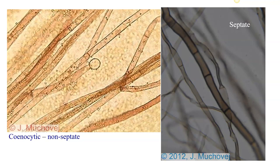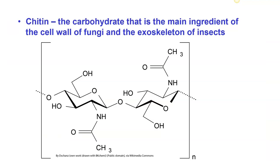Multicellular is considered to be more advanced than single-celled. The outer material on hyphae is called chitin, and chitin is the carbohydrate that is the main ingredient of the cell wall of fungi and of the exoskeletons of insects. Chitin is polymerized N-acetylglucosamine. It's found in insects and in fungi — if you have ever eaten shrimp, which is an arthropod, the outer part is actually made up of chitin. It's a very durable type of material.